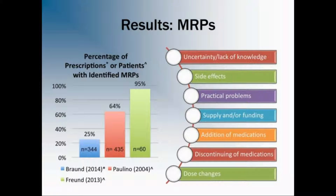Some examples of the medication-related problems identified in these studies are on the right, and they include side effects, practical problems such as improper use of the device, addition or discontinuation of medications, and dose changes.